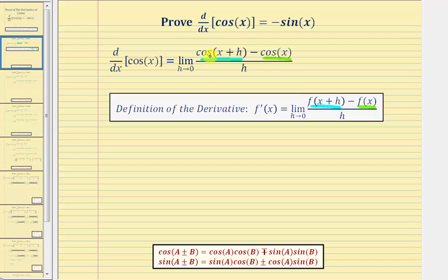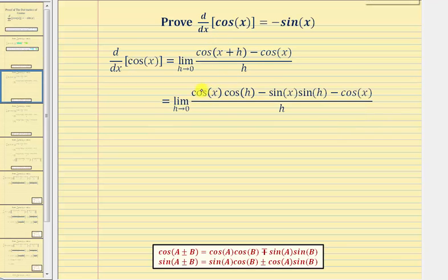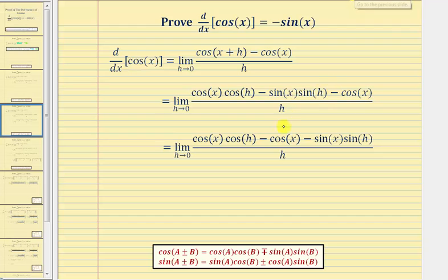So when we expand cosine of the quantity x plus h, we get cosine x times cosine h minus sine x times sine h. For our next step, we're going to change the order of these last two terms in the numerator, so we have minus cosine x minus sine x sine h.